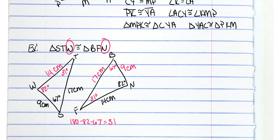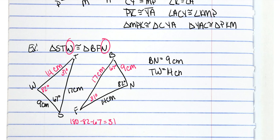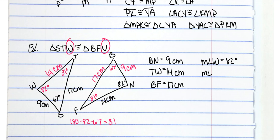Now whenever we get asked questions, we'll know all the answers. BN is 9 centimeters. Anytime you have equals, they want numbers; anytime you have congruences, they want letters. TW is 14 centimeters, BF is 17 centimeters, angle W is 82 degrees, angle B is 67 degrees, and angle F is 31 degrees. And that's how you do a problem like that.